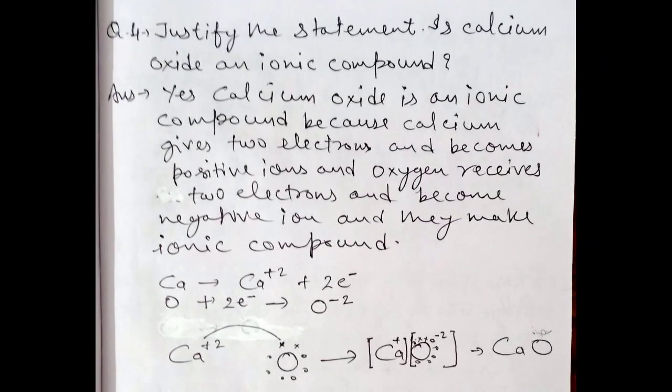Justify the statement: Is calcium oxide an ionic compound? Yes, calcium oxide is an ionic compound because calcium gives two electrons and becomes a positive ion, and oxygen receives two electrons and becomes a negative ion, and they make an ionic compound. Calcium ne do electrons lose kare — calcium 2+ cation ban gaya, plus two ka charge aa gaya. Is tarike se oxygen ne woh do electrons grant kar liye aur oxygen mein minus two ka charge aa gaya.